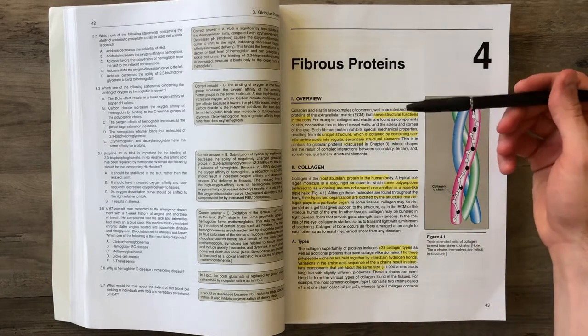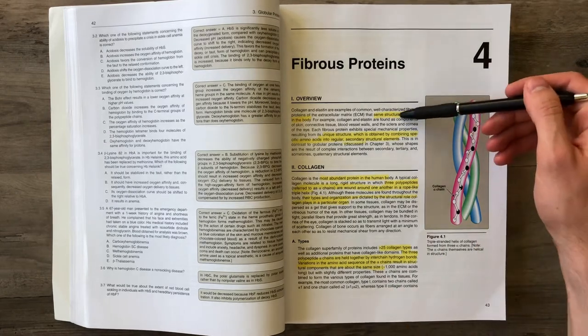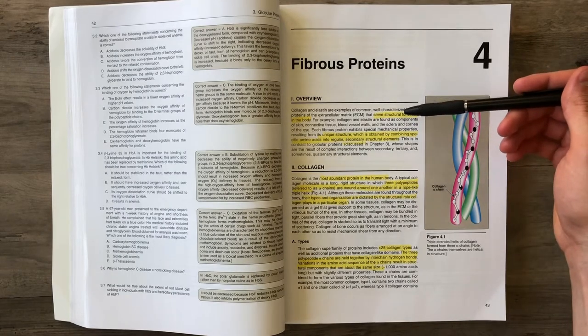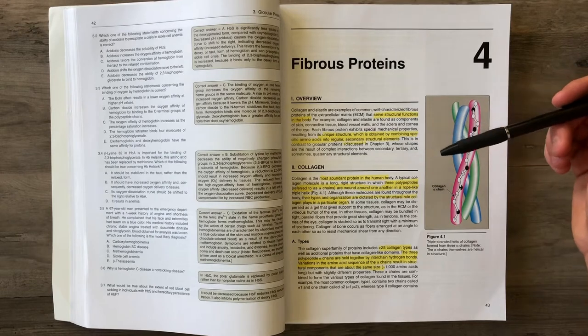Fibrous proteins serve as a structural component within the body, forming the structure of our cells, our extracellular matrix, and our tendons.